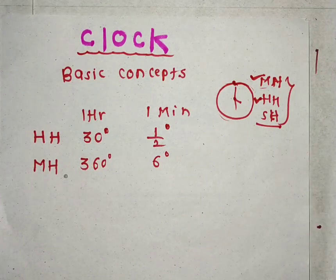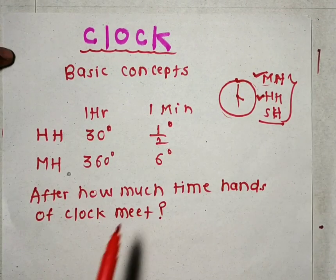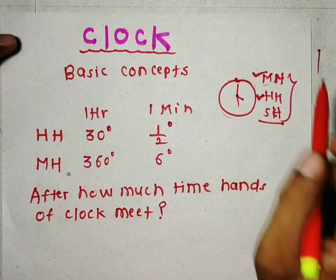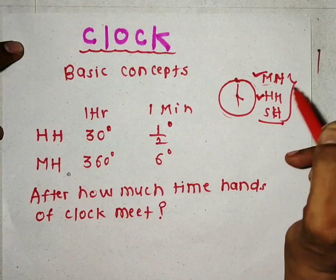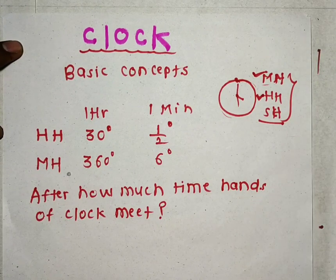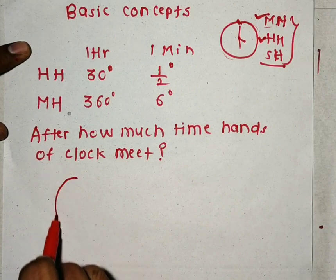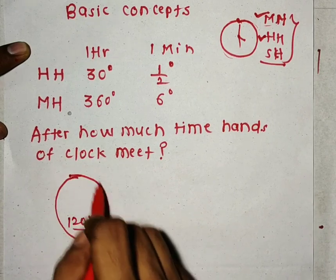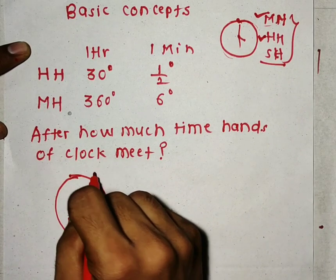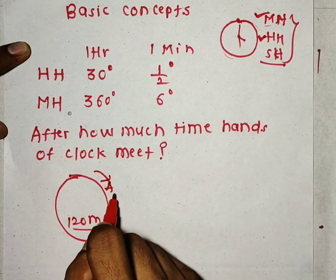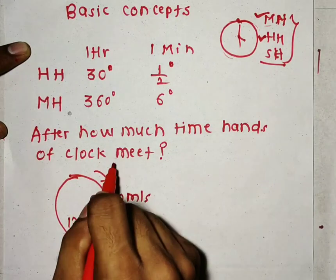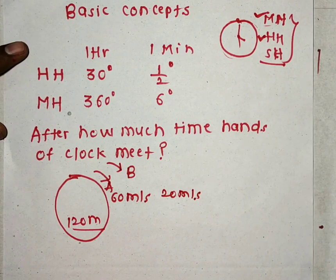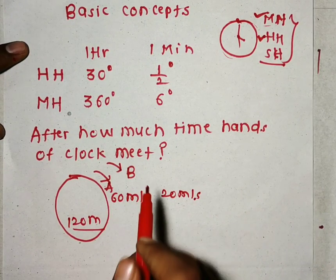Now if someone asks you the question: after how much time do the hands of a clock meet? Means after how much time will this minute hand and hour hand meet? Let's see — if there is a circular track whose circumference is 120 meters, and person A is running at a speed of 60 meters per second and person B is running at a speed of 20 meters per second, we have to find out after how much time A and B will meet together.